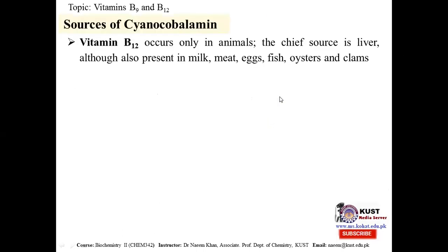Sources of cyanocobalamin: it is important to note that Vitamin B12 occurs only in animal sources. The chief source is liver; it is also present in milk, meat, eggs, fish, and oysters. The richest source is liver, just like other B-complex vitamins. Other animal sources contain smaller amounts.